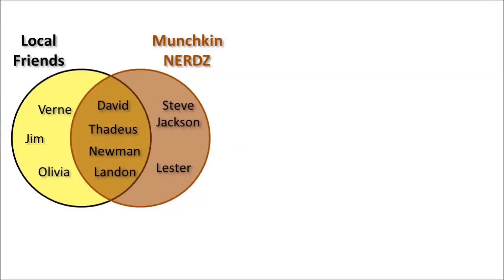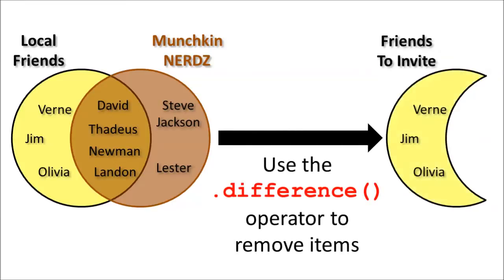That helped a lot with reducing our set, but we've still got a ways to go. I just saw on David's Twitter account that he's also planning a game night tonight, except he's planning on playing Munchkin. Munchkin is a game for nerds, and I can't have any of David's nerd herd invading my civilized evening of Settlers of Catan, so I think we can safely not invite them. To remove David and his Munchkin-playing nerds from my set of friends, I'll use the difference operator. If I call it on my set of friends and pass it the set of nerds as a parameter, it'll return a set which represents my list of local friends minus any that are in the nerd herd.